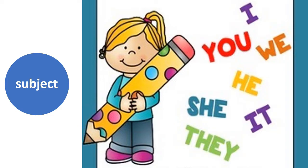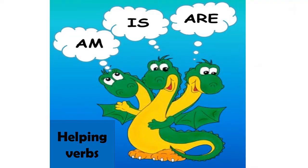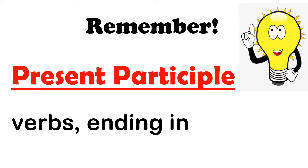For making present continuous tense, we need some helping verbs. These are three: am, is, are. These are the helping verbs which we are going to use with the main verb.